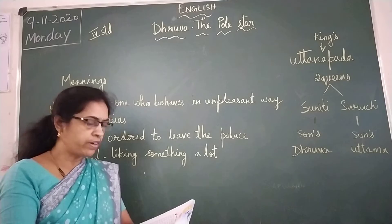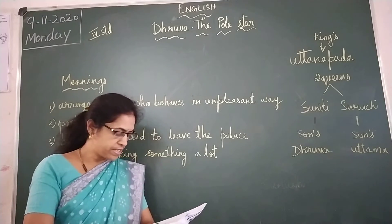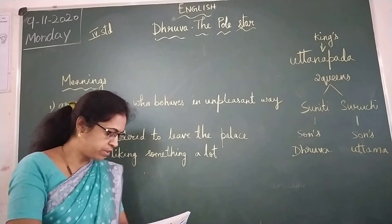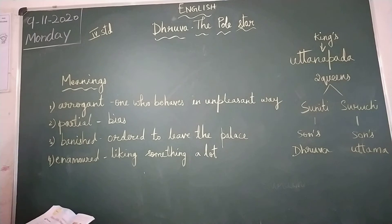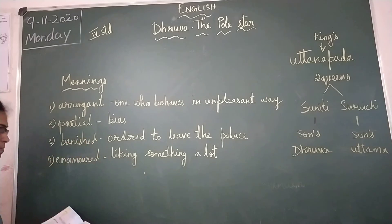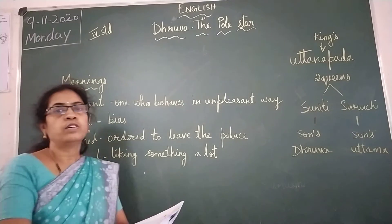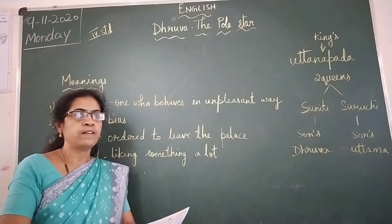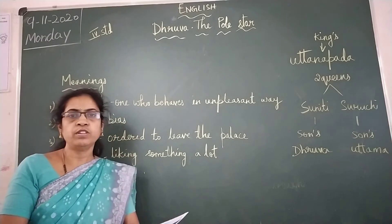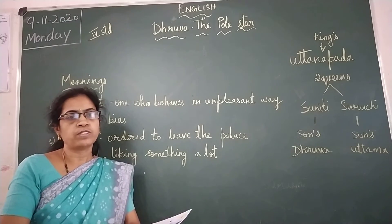However, because of her beauty and charm, the king was partial to Suruchi. Partial means bias — the king always used to take Suruchi's side because she was beautiful. Because of her beauty and charm, the king was partial to Suruchi.